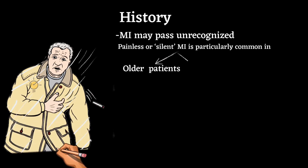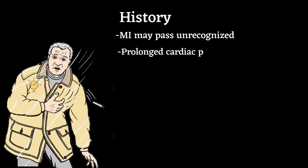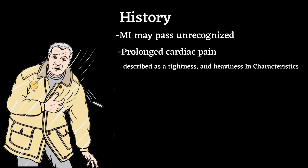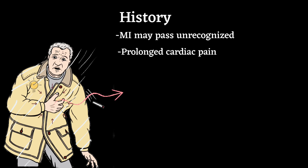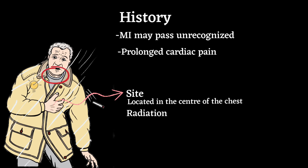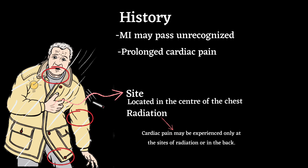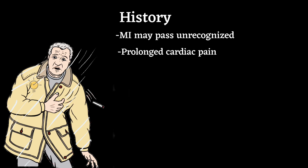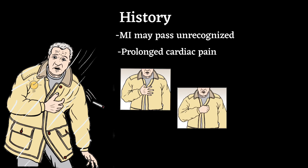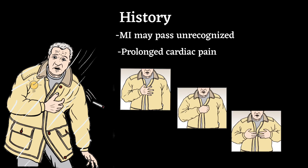MI may pass unrecognized — silent MI is particularly common in older patients or those with diabetes mellitus. Often there is prolonged cardiac pain described as tightness and heaviness. Cardiac pain is typically located in the center of the chest and may radiate to the neck, jaw, upper or lower arms. Patients often emphasize it is a discomfort rather than pain, and typically use characteristic hand gestures — such as an open hand or clenched fist — when describing ischemic pain.